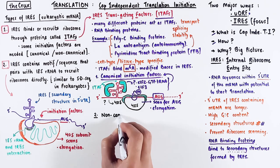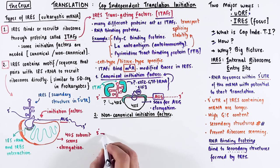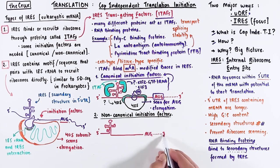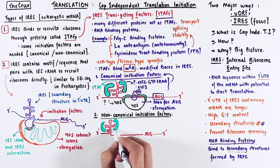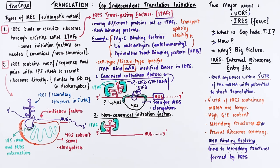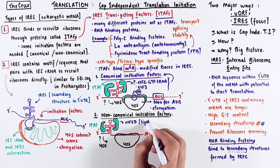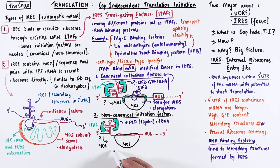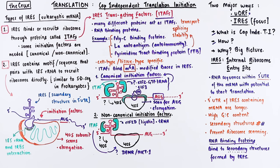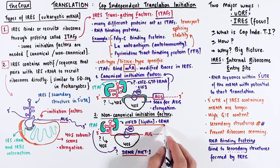The second way ITEFs work is through non-canonical initiation factors. The process starts when the ITEFs bind to the IRES secondary structure in the 5' UTR, and through some unknown mechanism, recruit the 40S subunit onto the mRNA. But instead of EIF2 and EIF3, they recruit EIF2D, which carries the initiator tRNA, and some other factors like DENR and MCT1. We saw these non-canonical initiation factors when we discussed translation termination in eukaryotes. It is unclear why or what makes the ITEF recruit these non-canonical factors over canonical initiation factors.